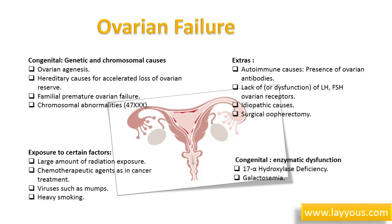Autoimmune causes include the presence of ovarian antibodies. Lack of or dysfunction of LH and FSH ovarian receptors is another cause. Idiopathic causes are also recognized. Surgical oophorectomy is an additional cause of ovarian failure.